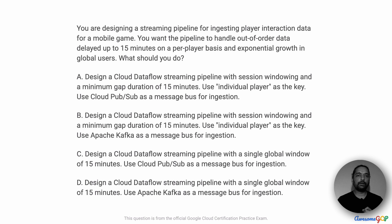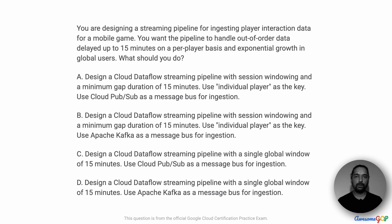In this project scenario, you are designing a streaming pipeline for ingesting player interaction data for a mobile game. You want the pipeline to handle out-of-order data delayed up to 15 minutes on a per-player basis and exponential growth in global users. What should you do?